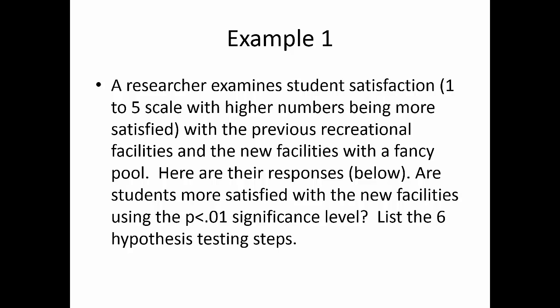This video covers how to do dependent T-tests, working through the six steps of hypothesis testing from the Nolan and Heinsohn Statistics for Behavioral Sciences. As an example, we have a researcher examining satisfaction on a one-to-five scale with old and new rec facilities. Old versus new is a great dependent setup. Are students more satisfied? We'll use p less than 0.01 and go through all six steps.